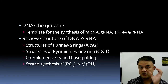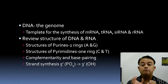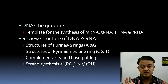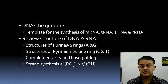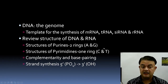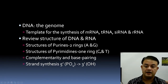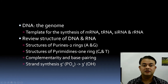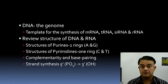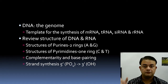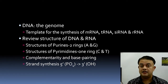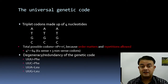Purines have two rings (adenine and guanine) and are larger, while pyrimidines have one ring (cytosine and thymine) and are smaller. Base pairing is complementary: A with T (two bonds) and G with C (three bonds). Strand synthesis proceeds from the 5' (phosphate) end to the 3' (OH) end.